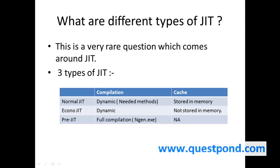Let's once again revise the answer. What are the different types of JIT? There are three types: Normal JIT, EconoJIT, and PreJIT. Normal JIT does dynamic compilation and stores in memory. EconoJIT does dynamic compilation but does not store in memory. PreJIT does full compilation by using ngen.exe.